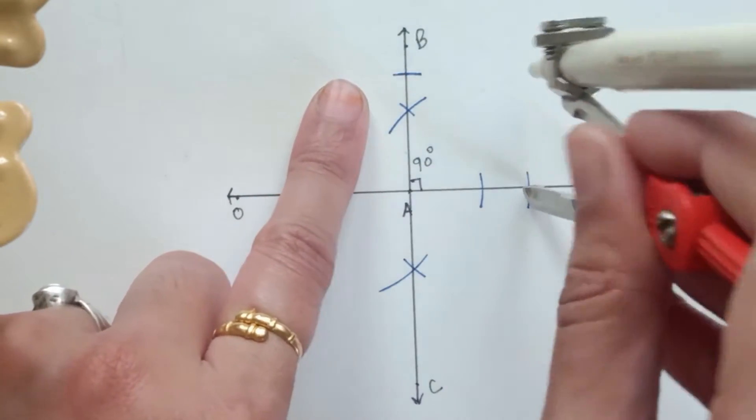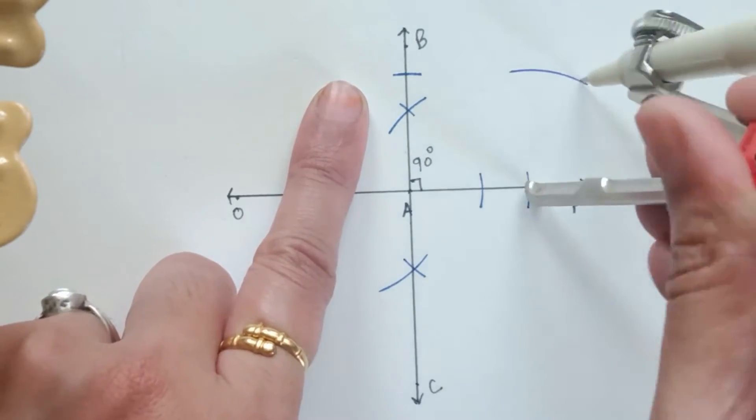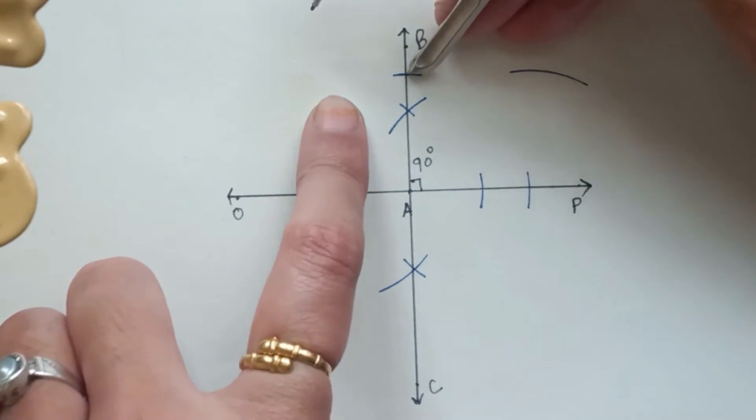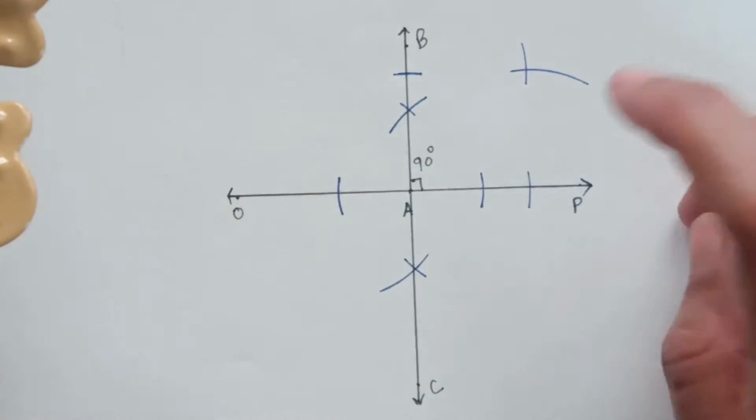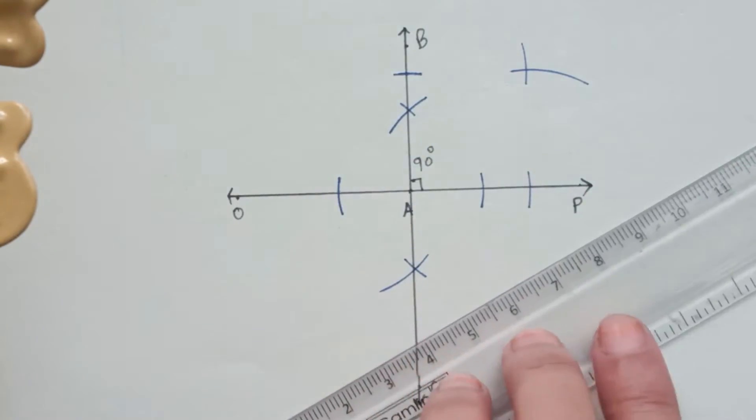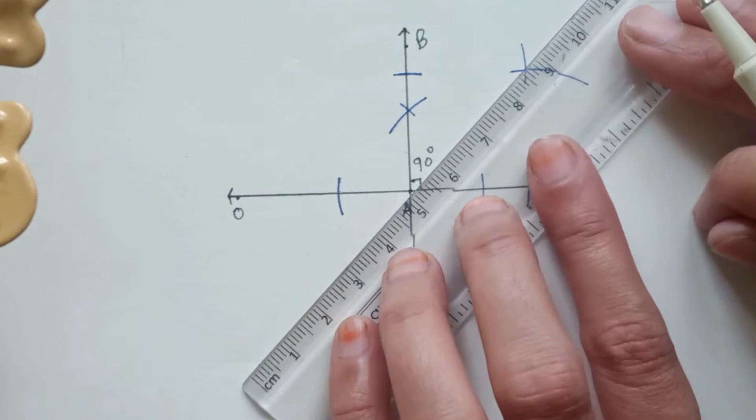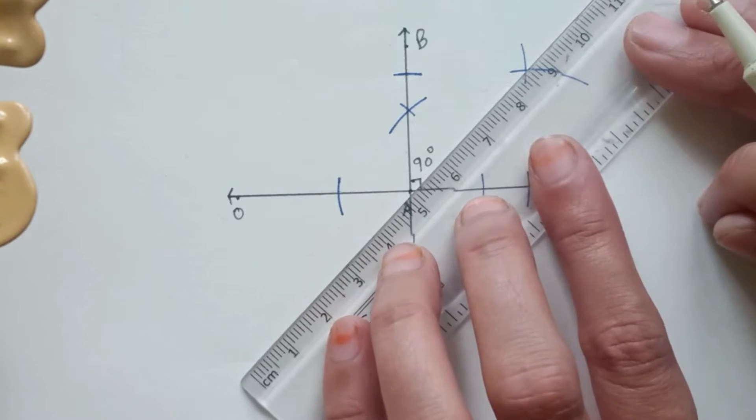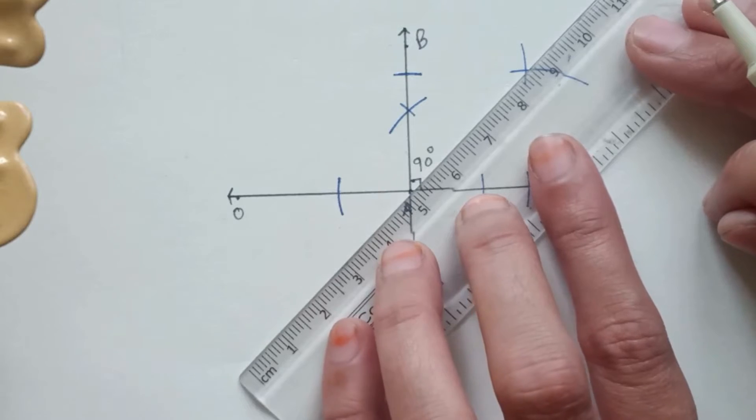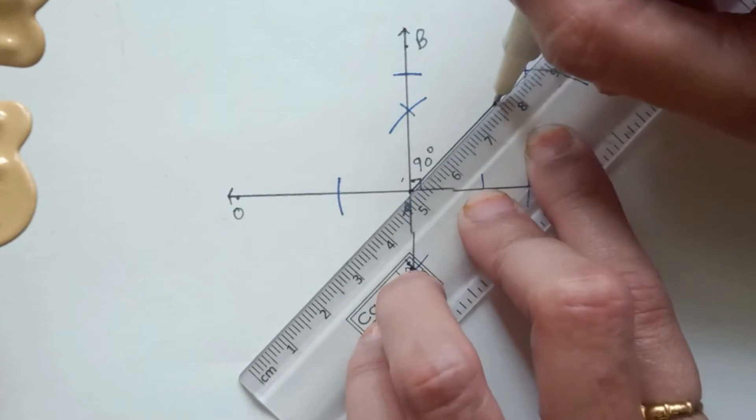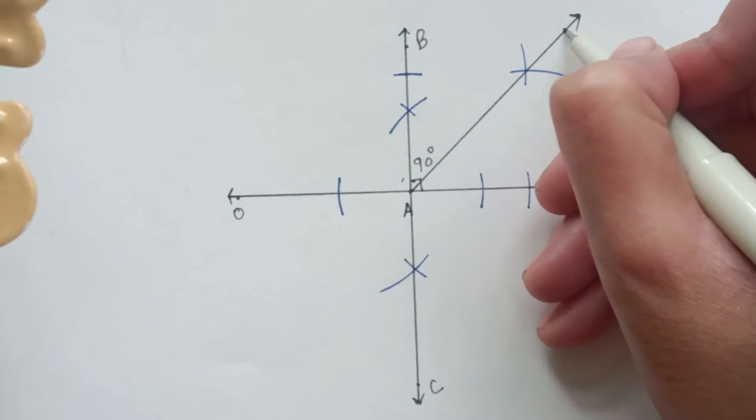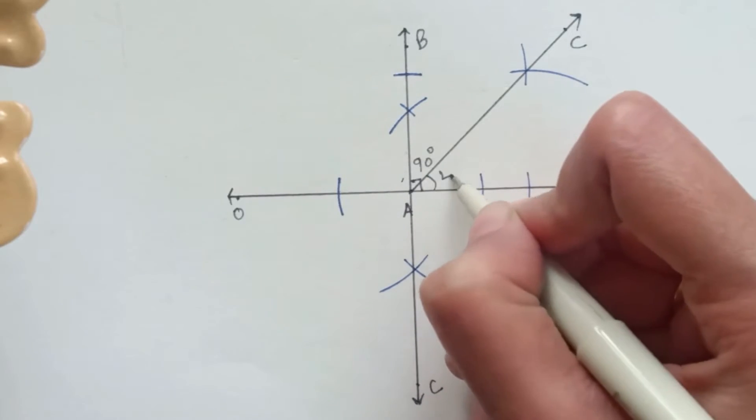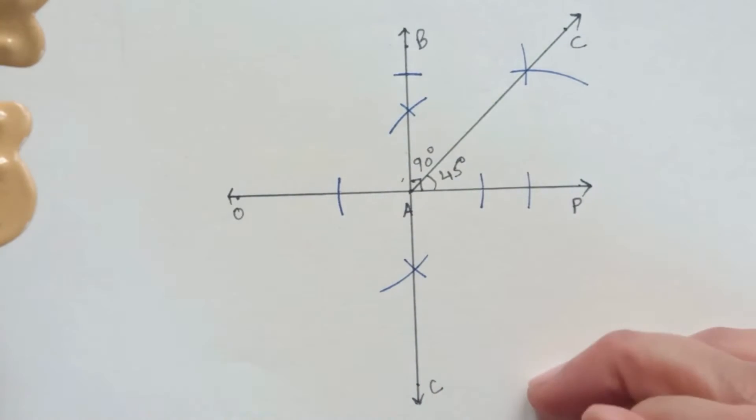So these two are the arcs that we have just marked. Keep the pointer on one of the arcs and draw intersecting arcs from both the newly drawn arcs. Now we have to join this with A. There we get C and this angle will be a 45 degrees angle.